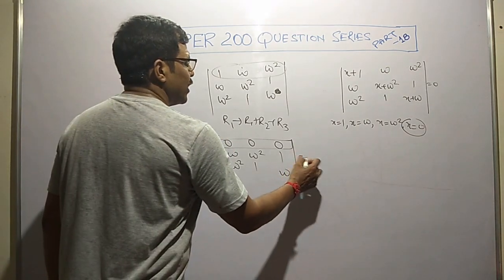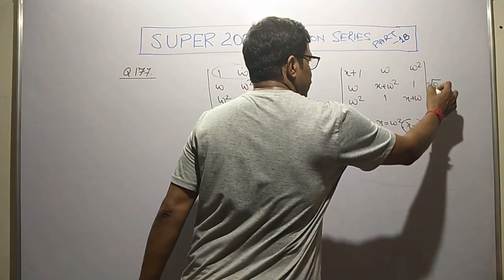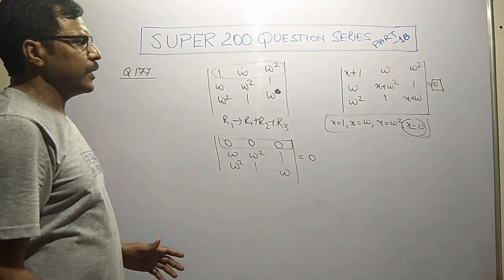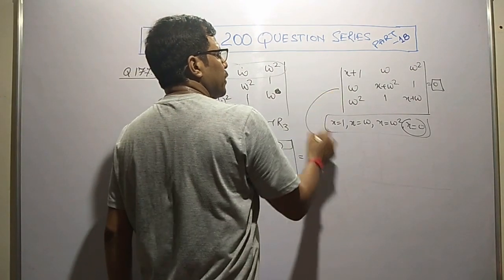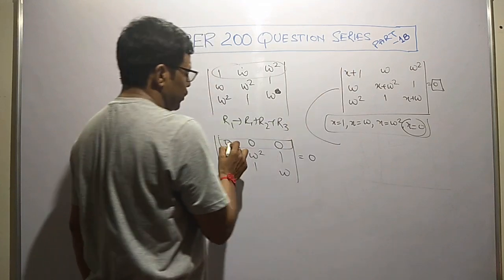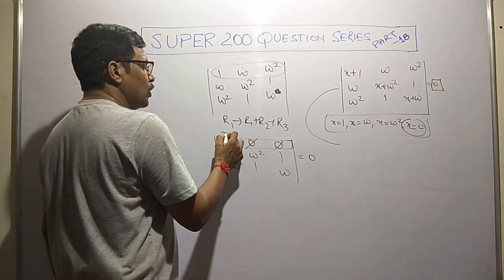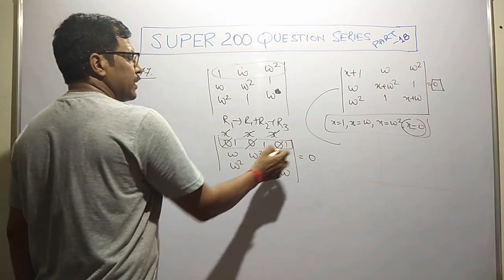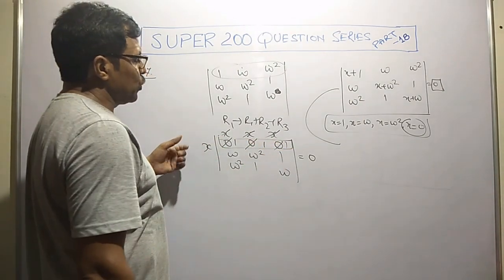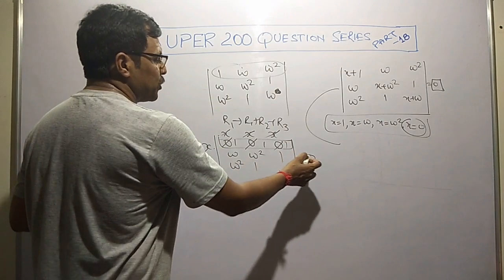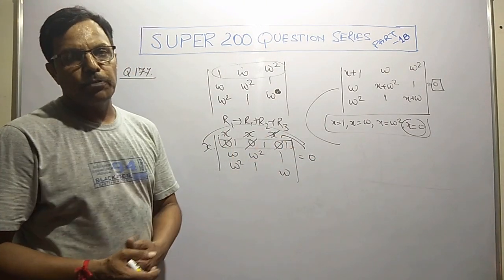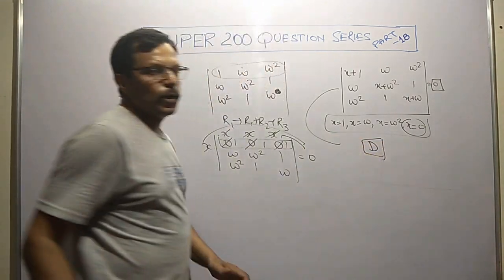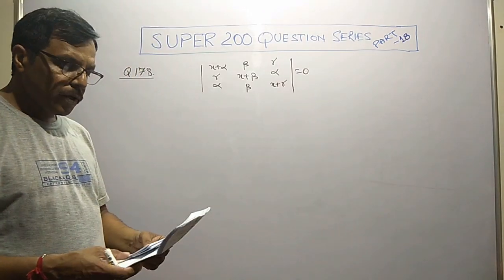Applying r1 tends to r1 plus r2 plus r3, the first row comprises 1 plus omega plus omega square, which equals zero. In case a determinant contains all zeros in any row or column, the value comes zero. So x equals 0 satisfies, and the option is D.